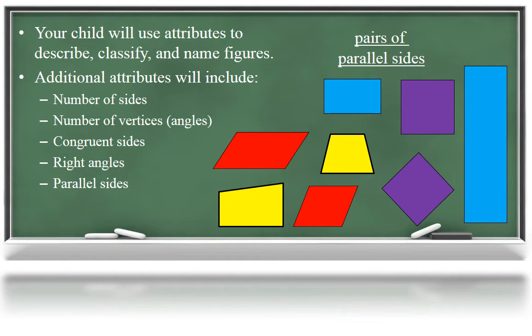Your child will look for the attribute of parallel sides as well. Two line segments are parallel if they can be extended but will never meet. All of these shapes have at least one pair of parallel sides. Can you identify which quadrilaterals have two pairs of parallel sides? That's right, all the shapes except for the yellow shapes.